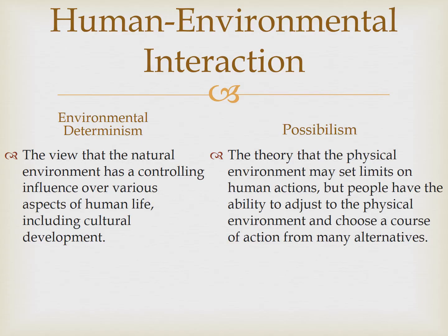We're going to start by examining some theories regarding human-environmental interaction, beginning with environmental determinism, which is the view that the natural environment has a controlling influence over various aspects of human life, including cultural development. Essentially, this theory means that humans are clay and they're molded by the environment. It was especially prominent in the late 19th and early 20th centuries, but has largely been discredited. It does explain, for example, how a region's climate and soil fertility can dictate many choices that a society makes. The key takeaway is that the environment determines.